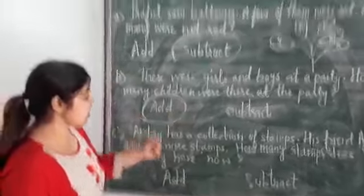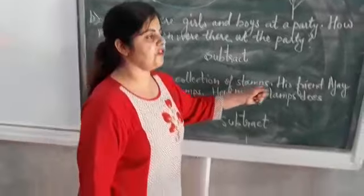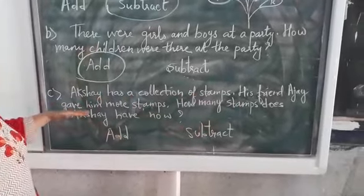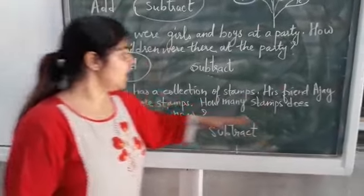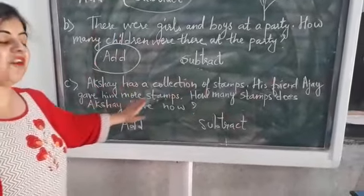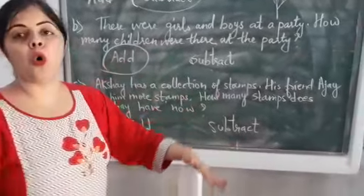Next, Akshay has a collection of stamps. Akshay is having a collection of stamps. His friend Ajay gave him more stamps. Means he is getting more.